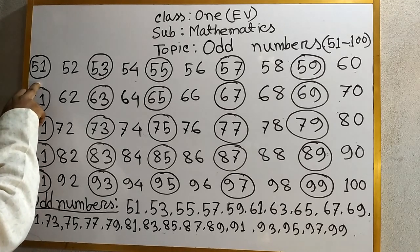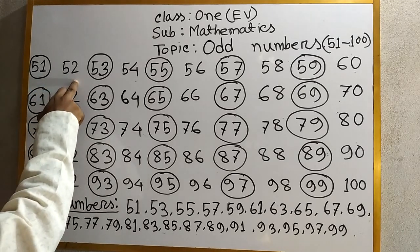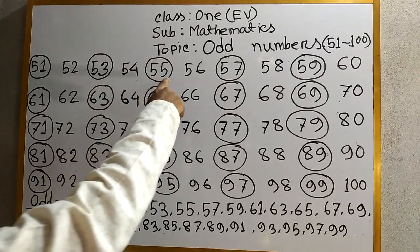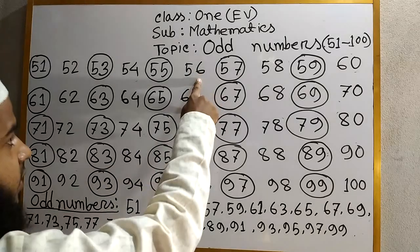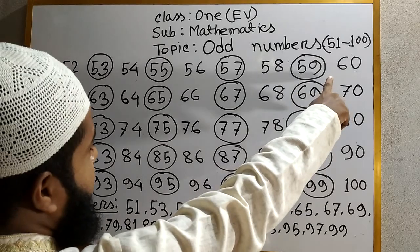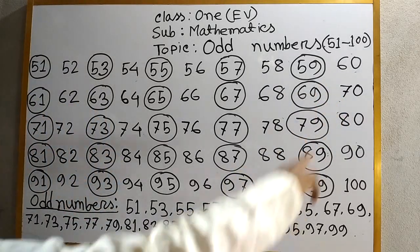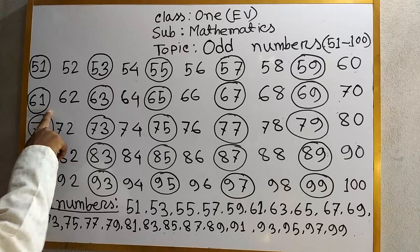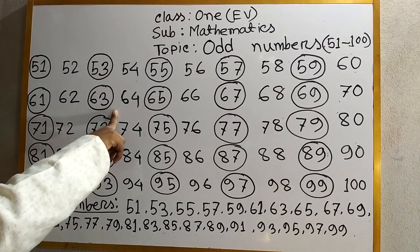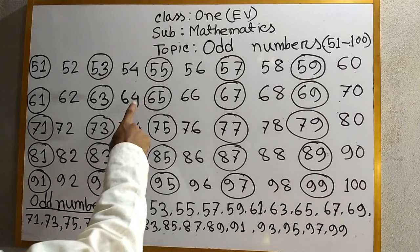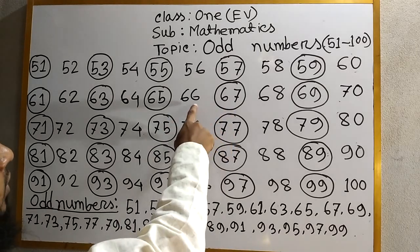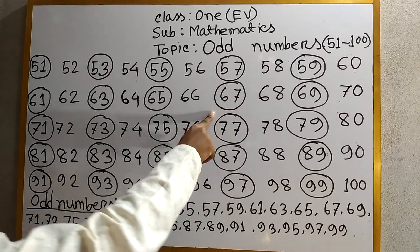51 odd number. 52. 53 odd number. 54. 55 odd number. 56. 57 odd number. 58. 59 odd number. 60. 61 odd number. 62. 63 odd number. 64. 65 odd number. 66. 67 odd number.